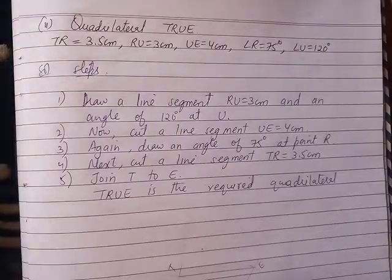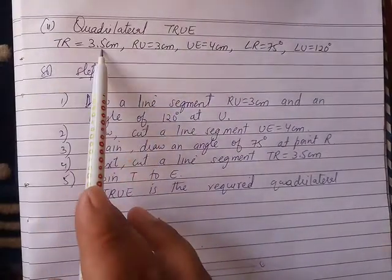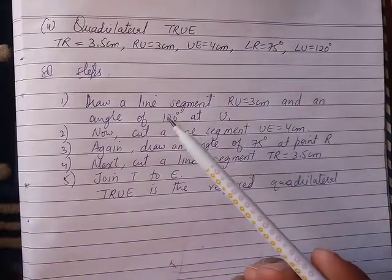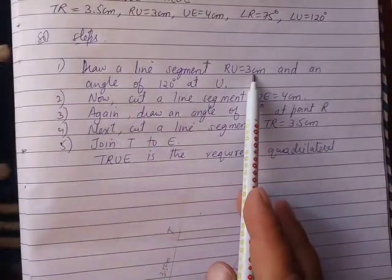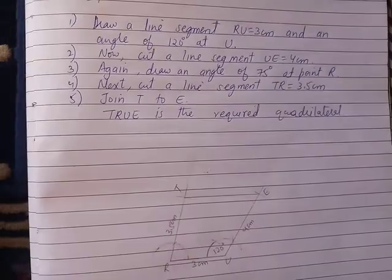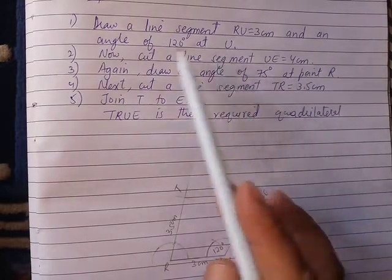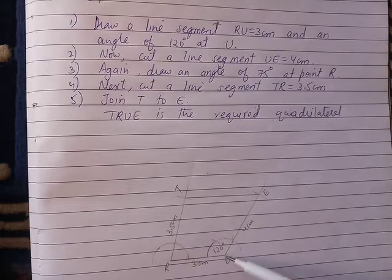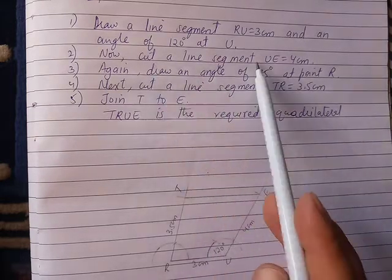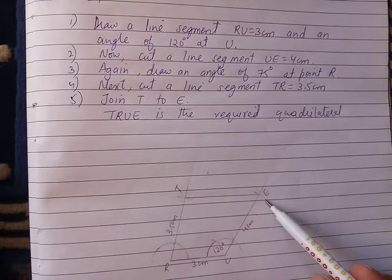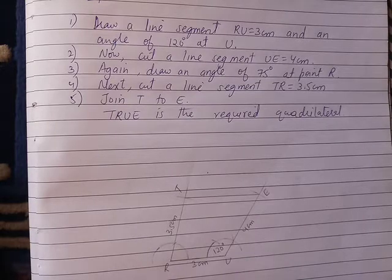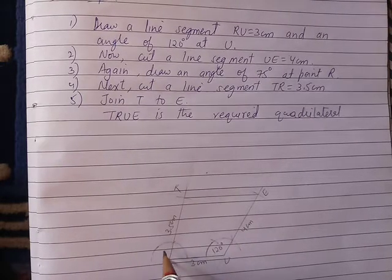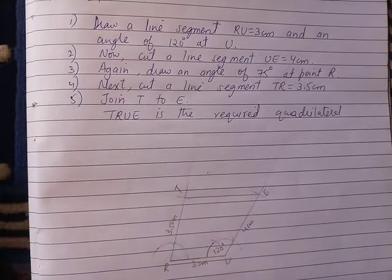Question number two: Draw quadrilateral TRUE where TR=3cm, RU=3cm, UE=4cm, angle R=75 degrees, angle U=120 degrees. Draw a line segment RU=3cm. Then draw an angle of 120 degrees at U and cut UE=4cm. Next, draw an angle of 75 degrees at point R.